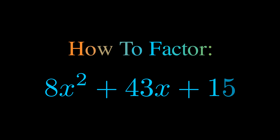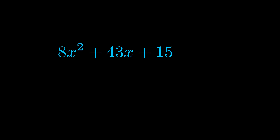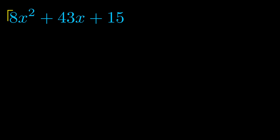In this video we're going to learn how to factor this equation. Step one when factoring an equation of this form is to multiply the a value by the c value. Here we can see that our a value is the coefficient on the x squared term, and our c value is the constant term. When we multiply these two values we get this value here in magenta.